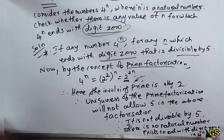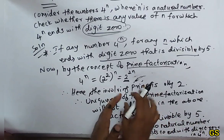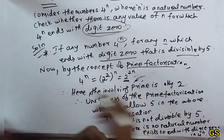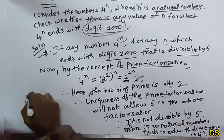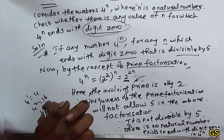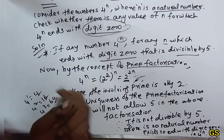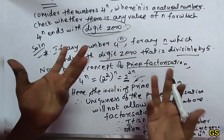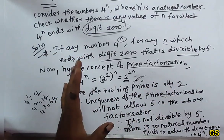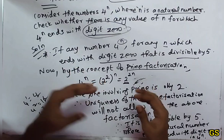In 4 power n, there is no natural number n that makes it end with digit 0. For example: 4 power 1 is 4, 4 power 2 is 16, 4 power 3 is 64. None of these end with 0. So, there is no such natural number.